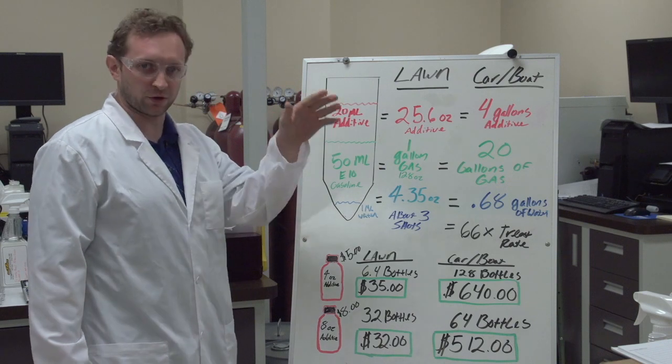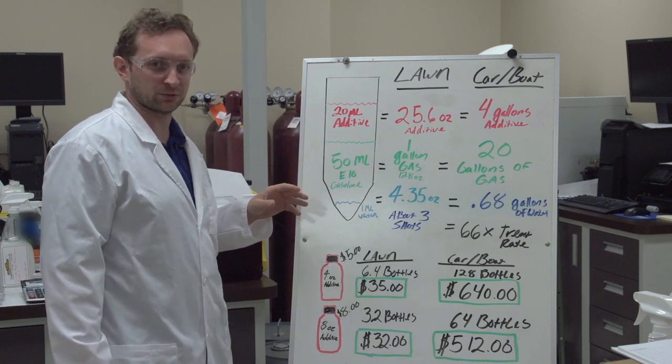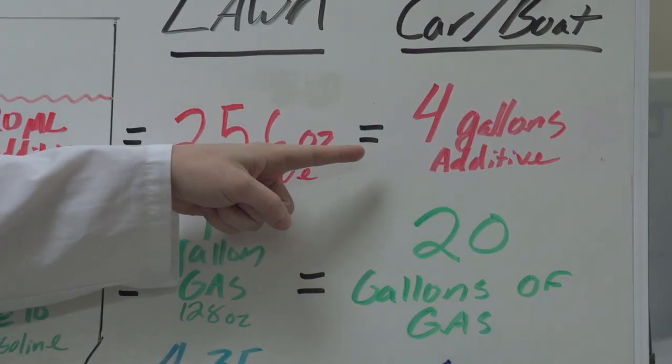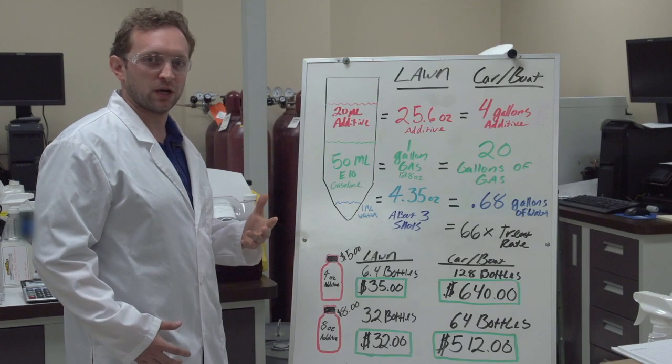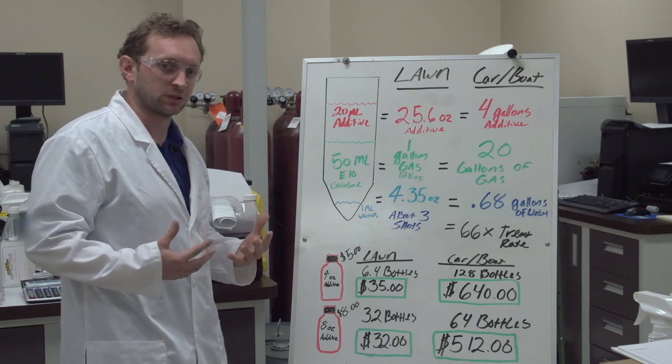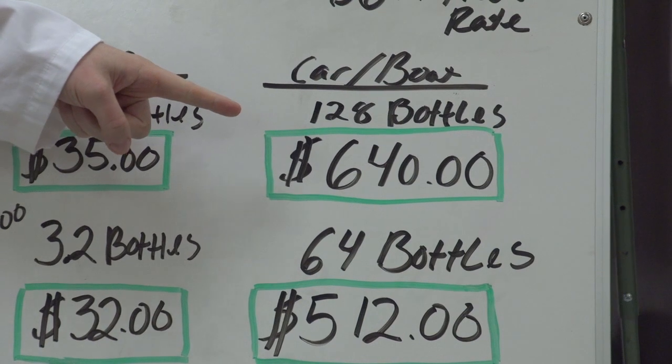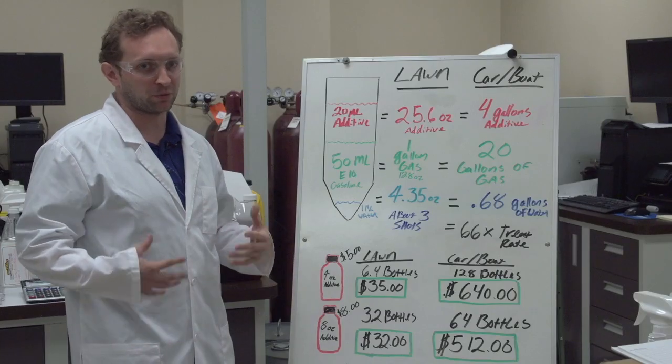If you go even farther to 20 gallons of gas, which you would find typically in a car or a boat, you're putting in four gallons of additive. What this equates to if you're looking at buying bottles of additive is $640 worth of additive or 128 bottles, which is completely unrealistic.